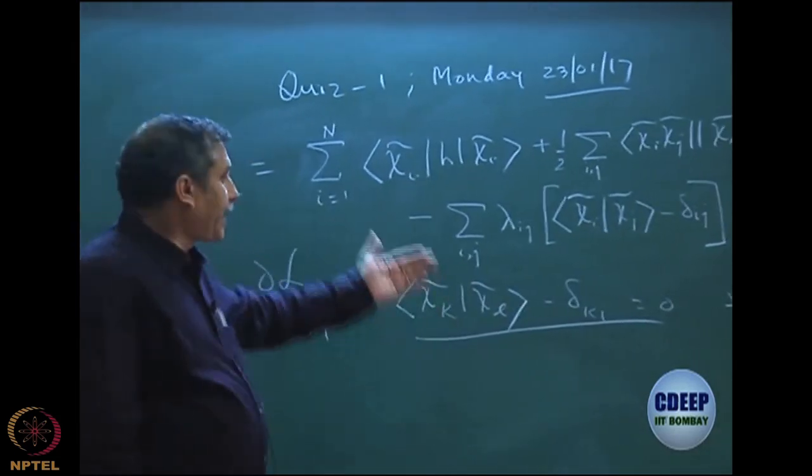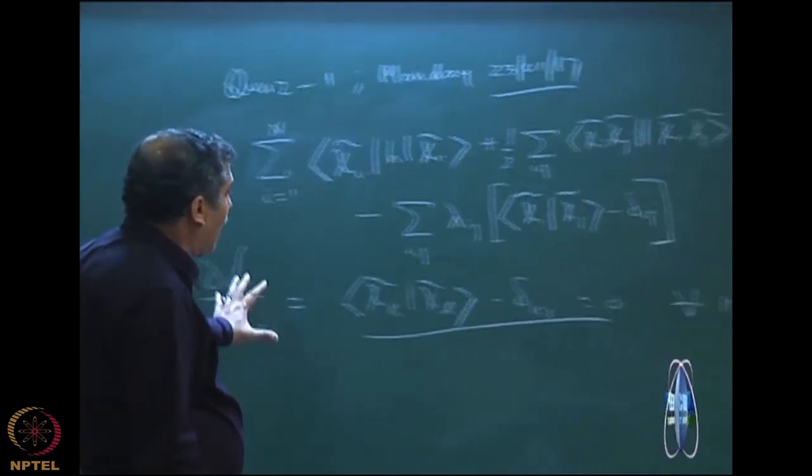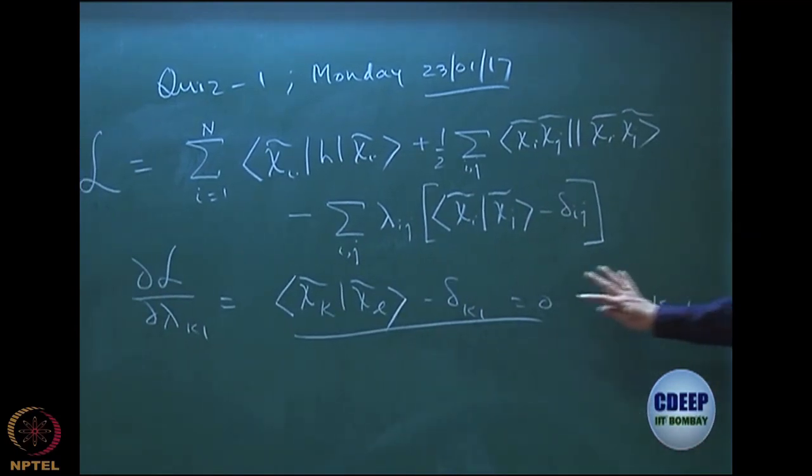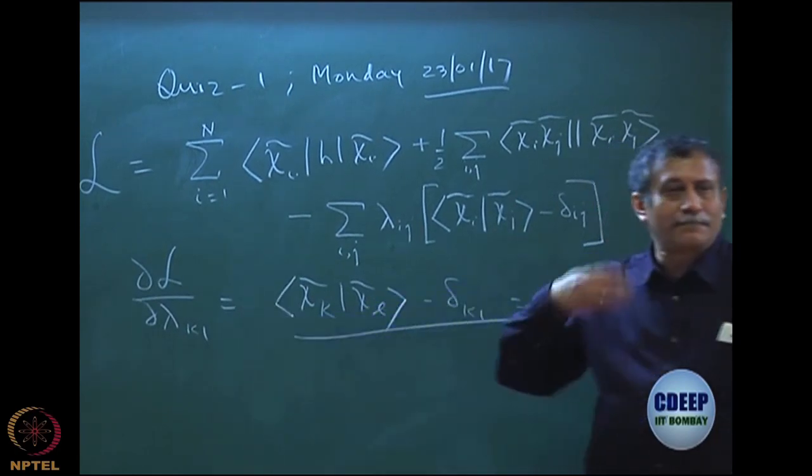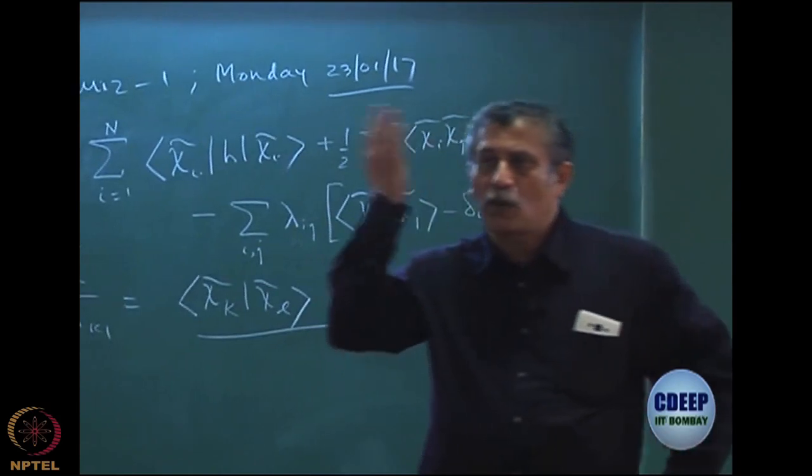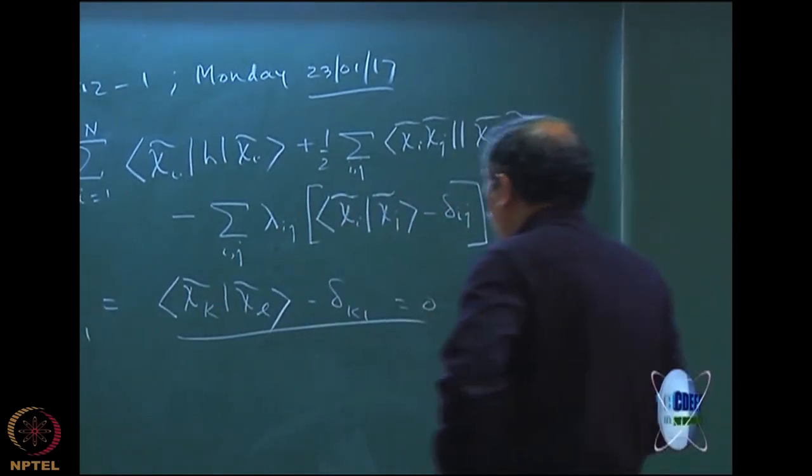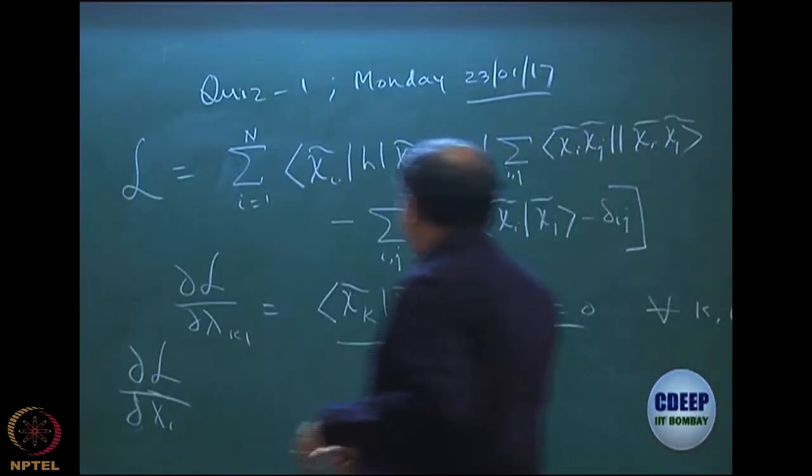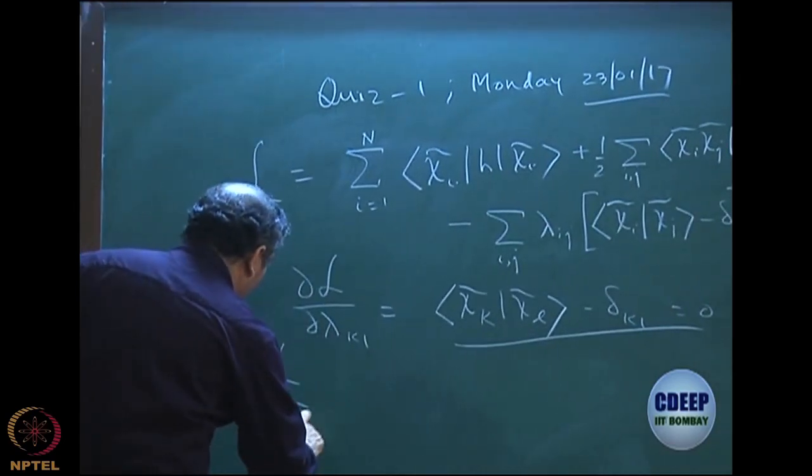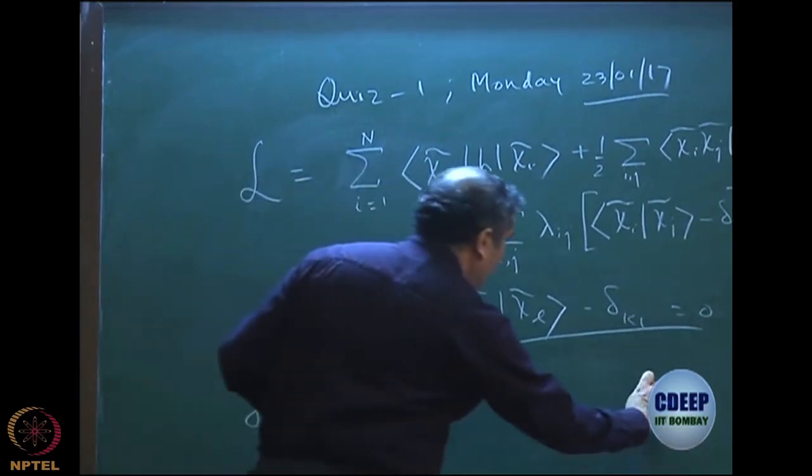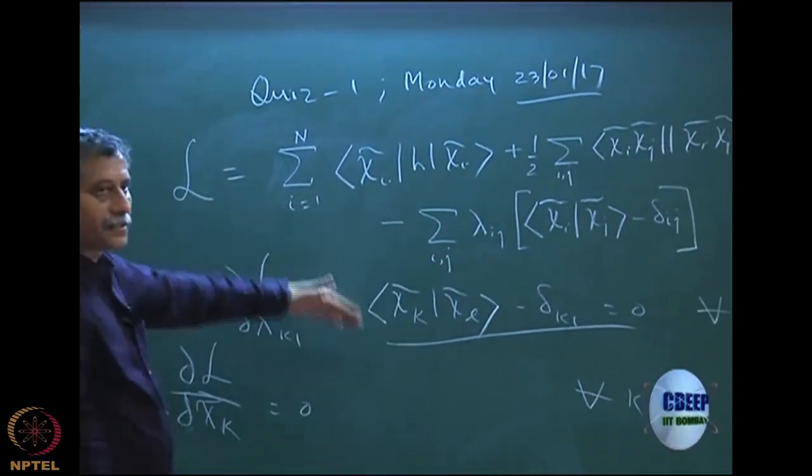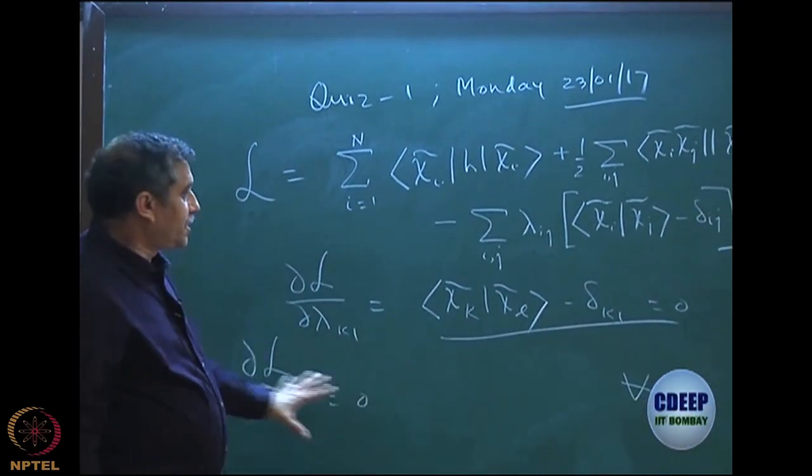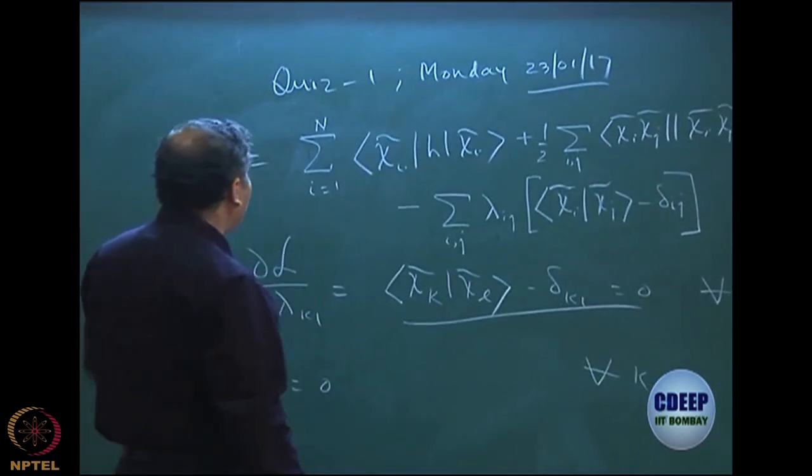For all k l, I can write down this equation. Essentially, I am not getting any new information. I am just ensuring that my conditions of orthonormality are satisfied. Really this equation is of no consequence because that is something that I know in my mind that they will be orthonormal. What is important is of course, the next set of equations which are basically the first derivative. Then the next ones are del L del chi k tilde equal to 0 for all k. That will be my set of equations and we will actually like to see what we get out of this. This is the important equation.